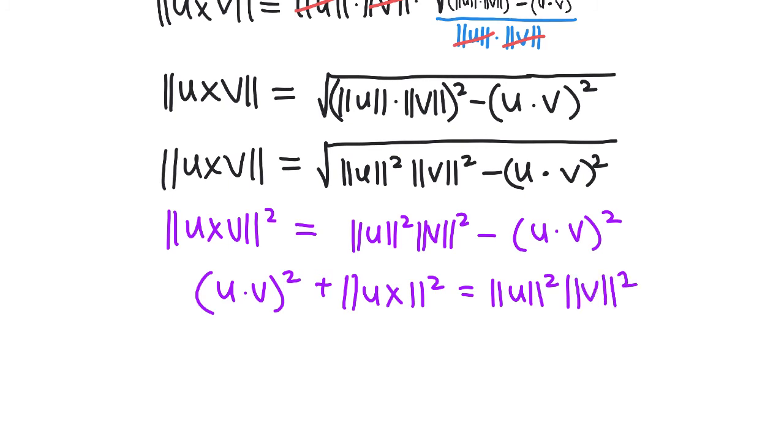Another thing I could do would be to solve for the dot product squared, in which case I would subtract the magnitude ||u||² ||v||² from both sides but then I'd have to negate, so that would become my positive with the cross product being my negative.